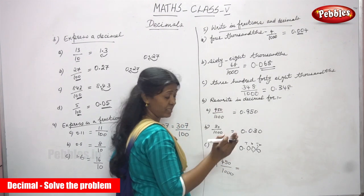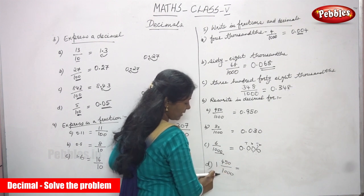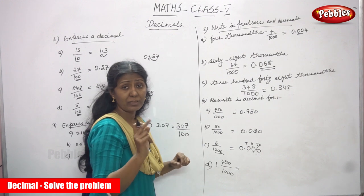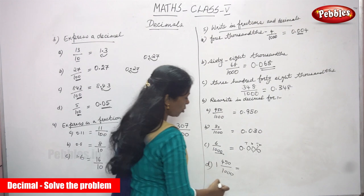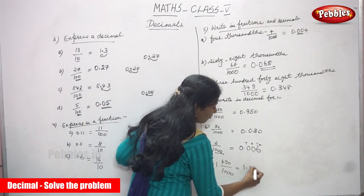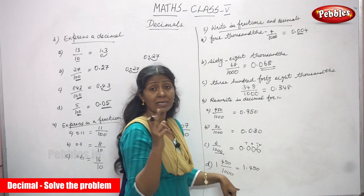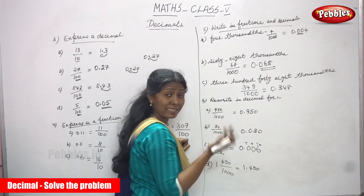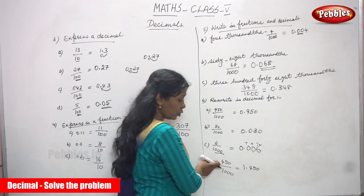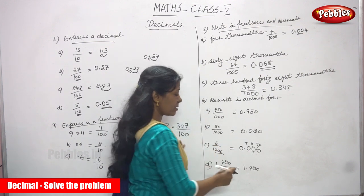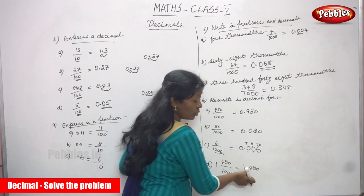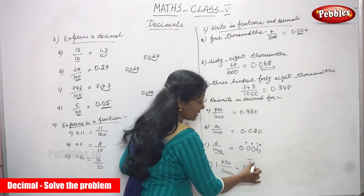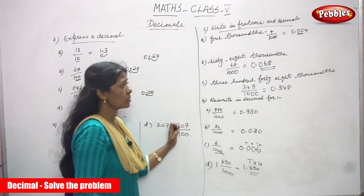For 1 and 450 by 1000: 1 is the whole number and 450 is the numerator with 1000 as the denominator. There are 3 zeros and 3 digits in the numerator, so no extra zeros needed. Write 1 as the whole number, put a point, then write 450 moving from right to left — 4, 5, 0. The answer is 1.450. After the point: tenths place, hundreds place, thousands place.